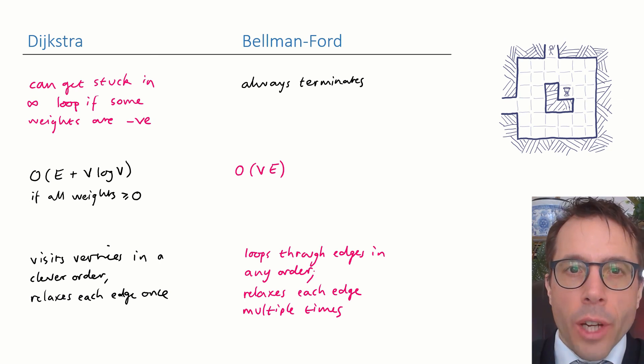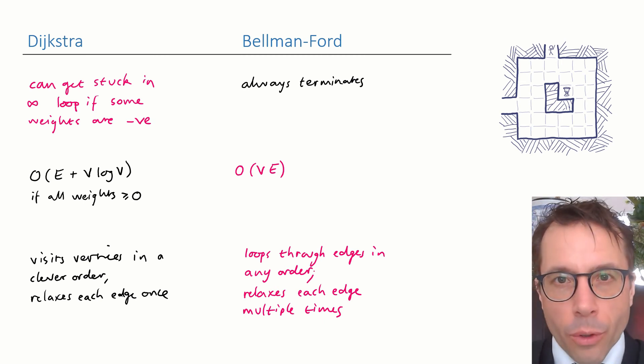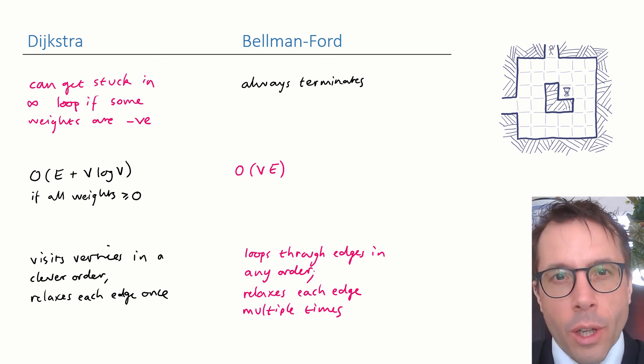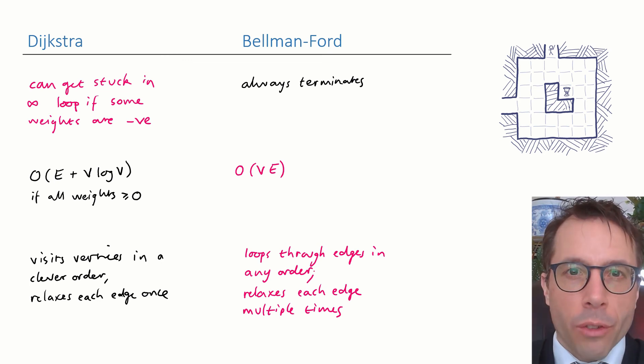Lastly, both Dijkstra and Bellman-Ford use the edge relaxation trick, but Dijkstra does it elegantly and efficiently, whereas Bellman-Ford does it brute force. Dijkstra visits the vertices in a very particular order, which ensures that it never needs to re-relax an edge, whereas Bellman-Ford might relax an edge on every pass. This is basically why Dijkstra is so fast.